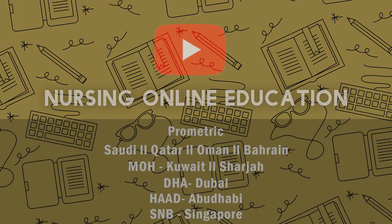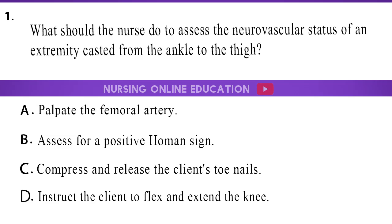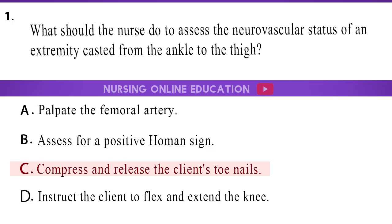Question 1: What should the nurse do to assess the neurovascular status of an extremity casted from the ankle to the thigh? A. Palpate the femoral artery. B. Assess for a positive Hohmann sign. C. Compress and release the client's toenails. D. Instruct the client to flex and extend the knee. The answer is option C: Compress and release the client's toenails.